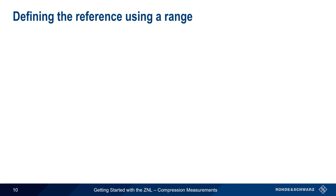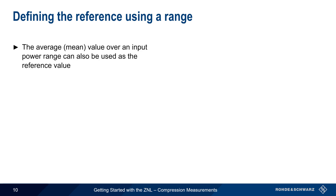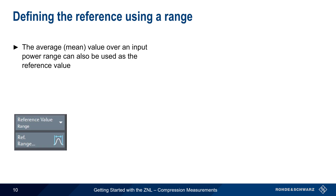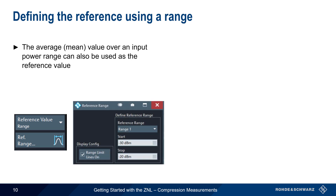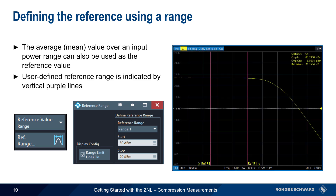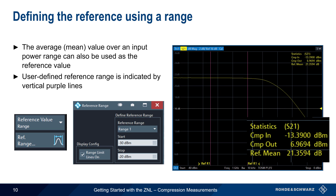The reference value can also be defined as the mean or average value over a range of input powers. After selecting Range as the reference value type, simply enter the start and stop input power values. This user-defined range is then displayed as vertical purple lines, and the mean reference value is displayed along with the calculated input and output compression points.